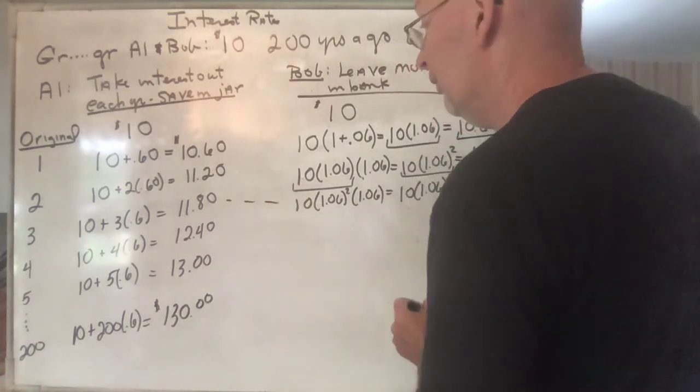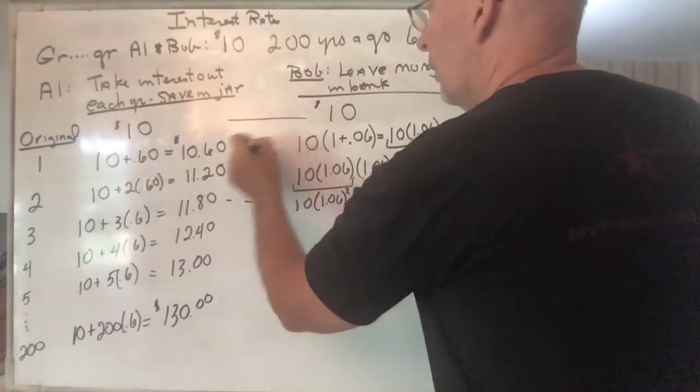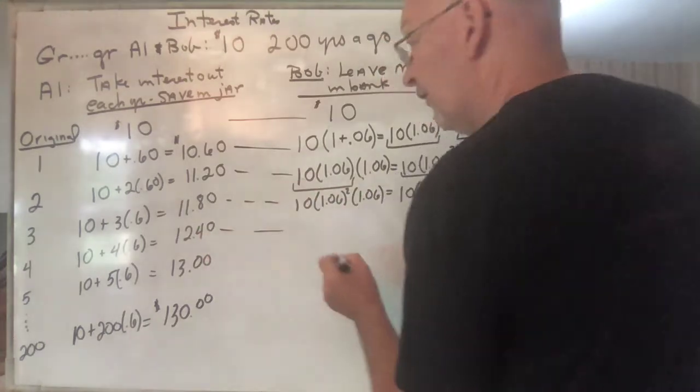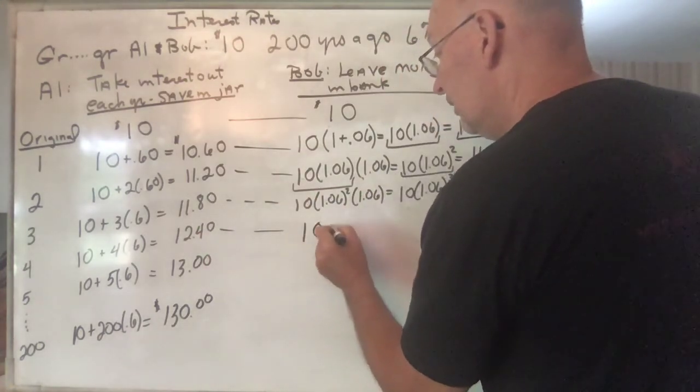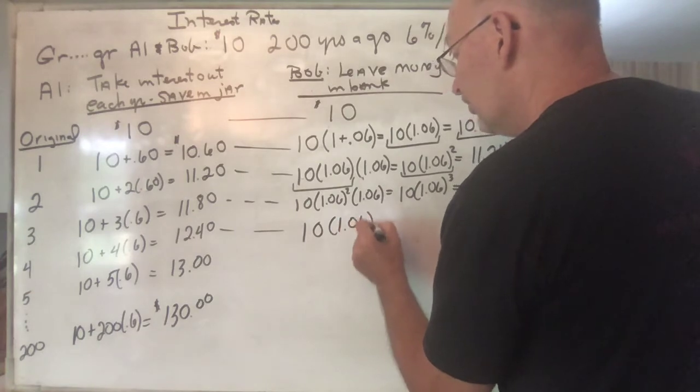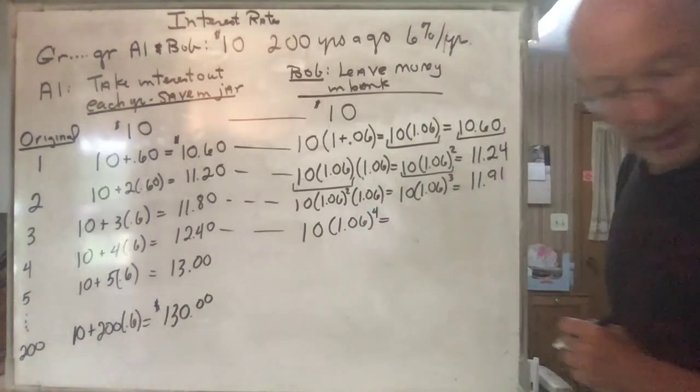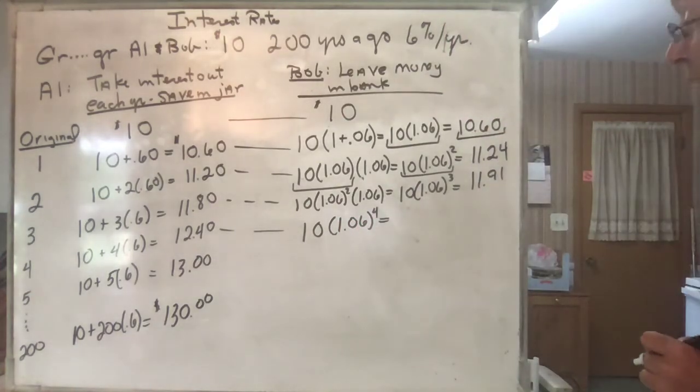At the end of the fourth year, you can see the progression here. It's going to be 10 times 1.06 to the fourth power, and that gives you $12.62.